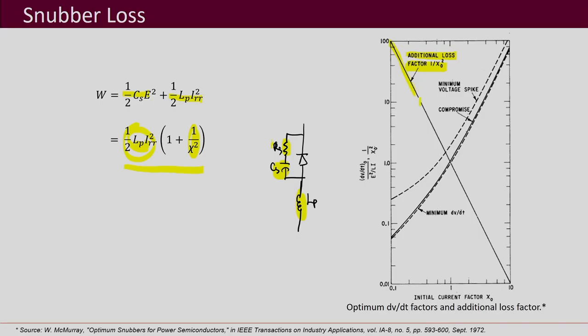Plotting this additional loss versus chi, as chi increases the additional loss decreases. However, this extra loss increases the overall converter loss. We do not want to reduce the converter's efficiency by having too-high values of RS, so during design you must also check how much extra loss the snubber introduces. If it becomes too lossy, readjust the values and check again.